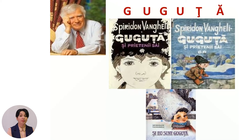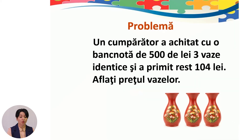Cunoașteți cu toții că autorul acestor istorioare este Spiridon Vanghele. Prima ediție a volumului Guguță și prietenii săi a apărut în anul 1994. Să știți că munca e prima dintre virtuți și, pentru că nimic nu-i fără o osteneală, vă propun să rezolvăm o problemă.